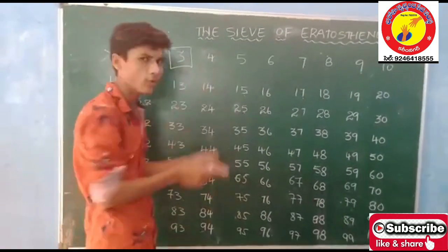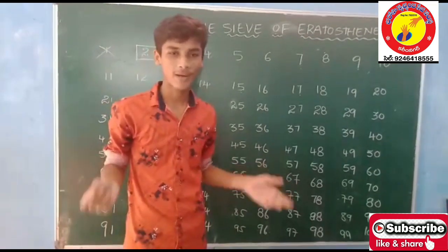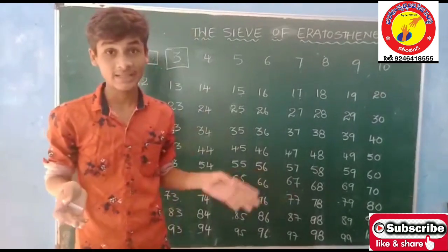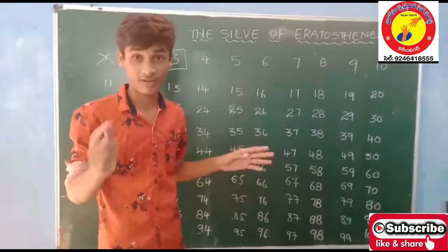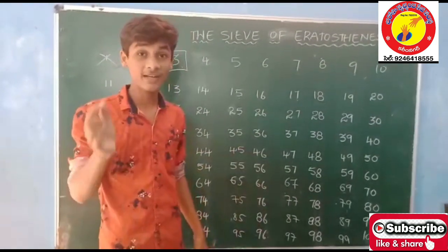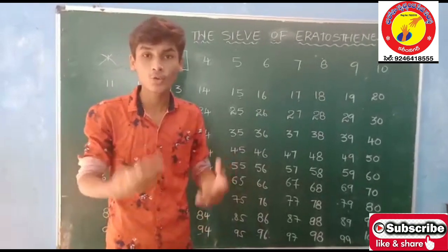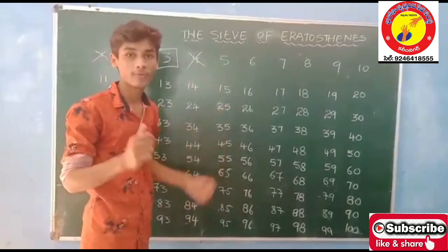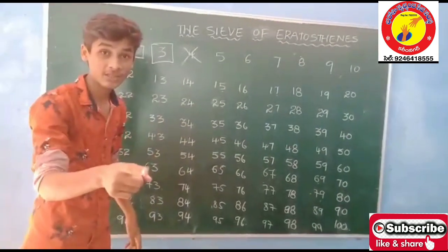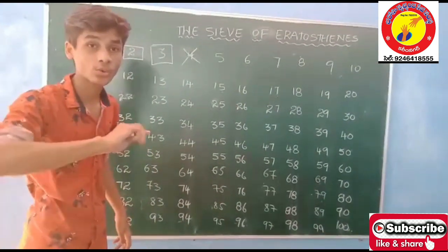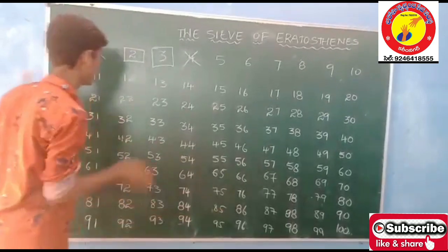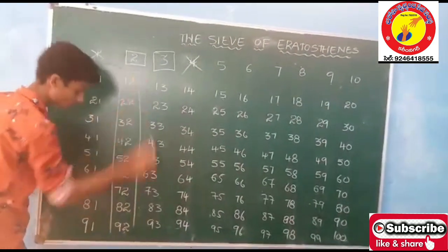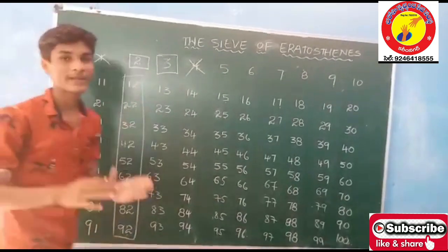Coming to 4 — 4 is not a prime number. It is a composite number, because it is the multiple of 2, and it is having 1 as its factor and itself as a factor, so it is having more than 2 factors. So all even numbers — that is, all multiples of 2 — should be cancelled or removed from our number system.